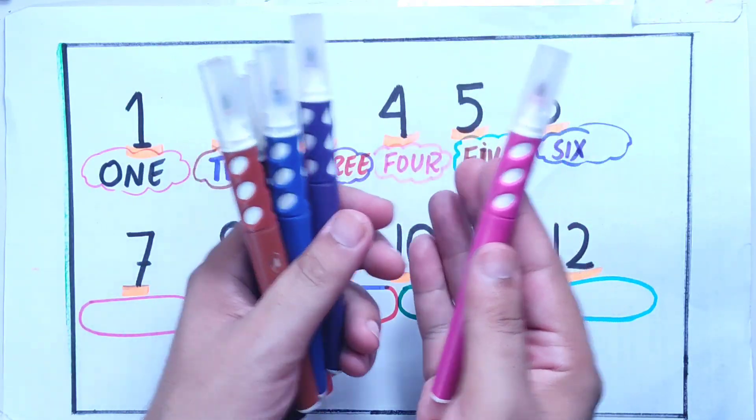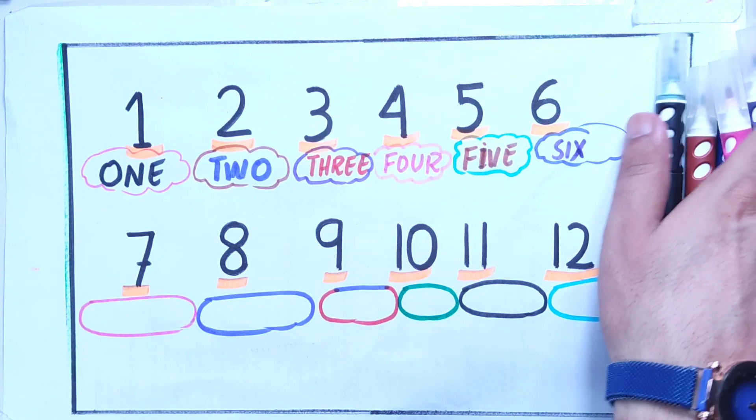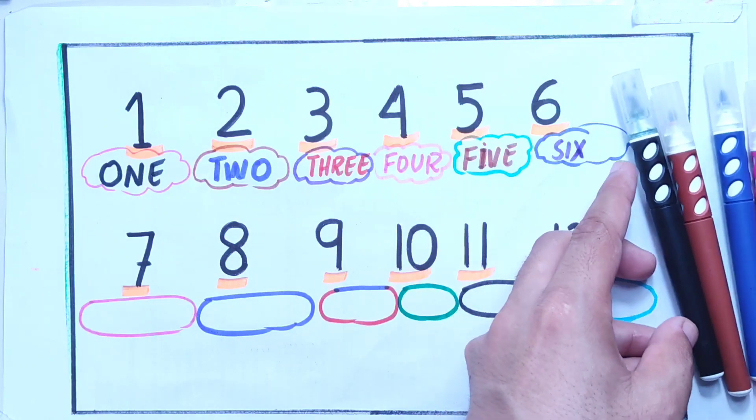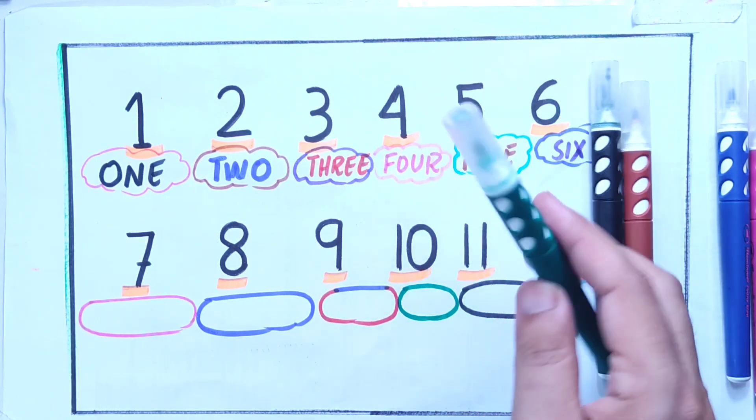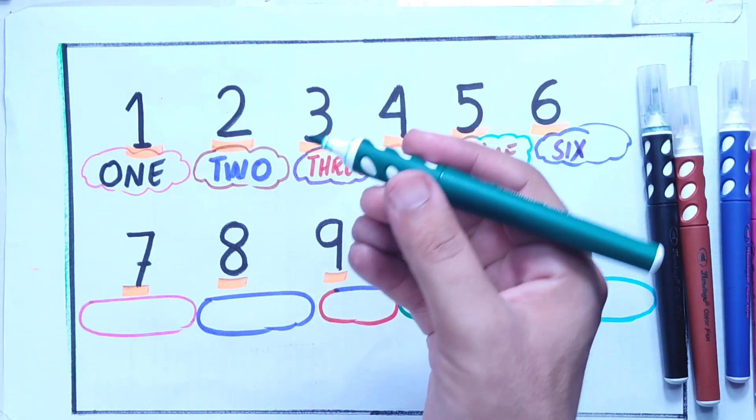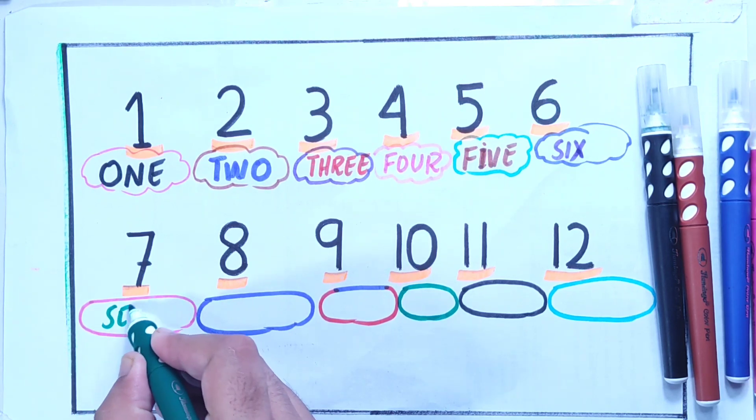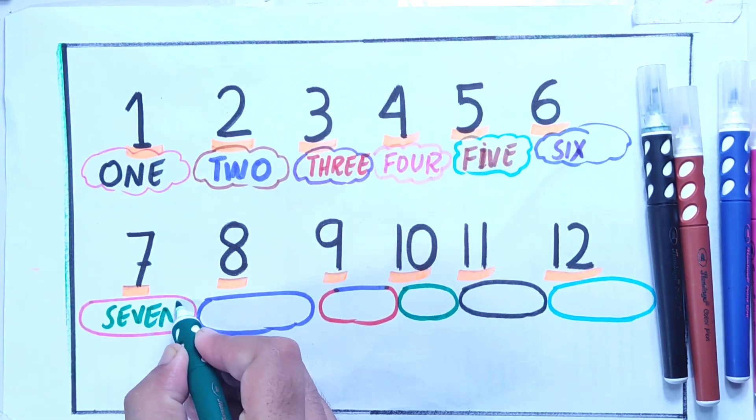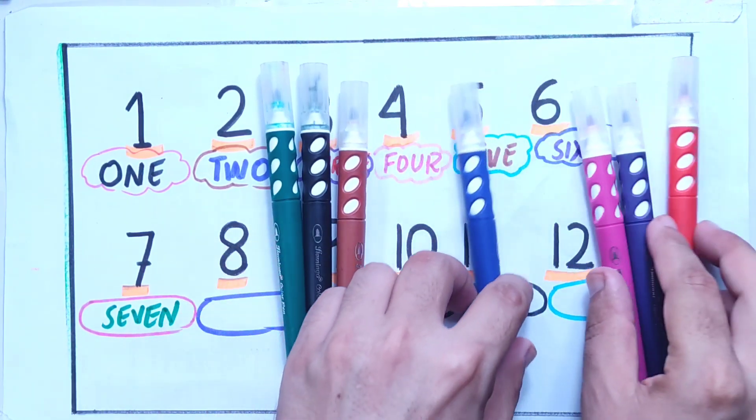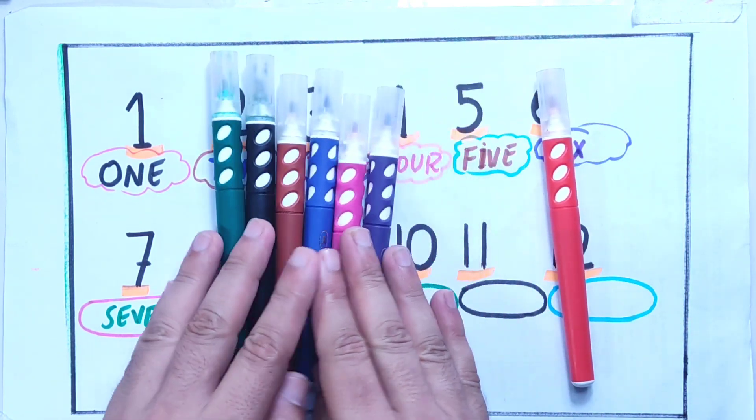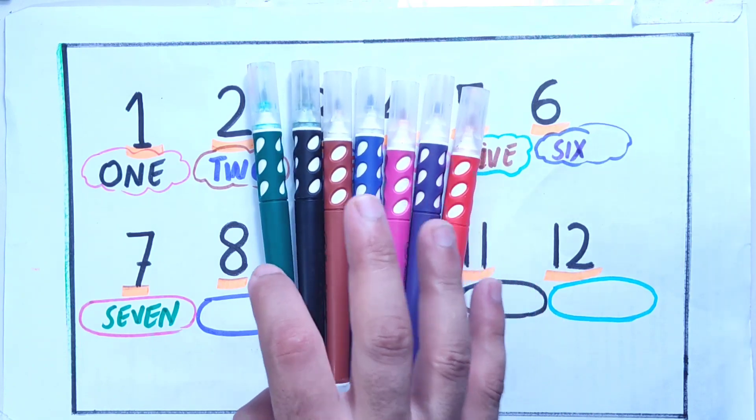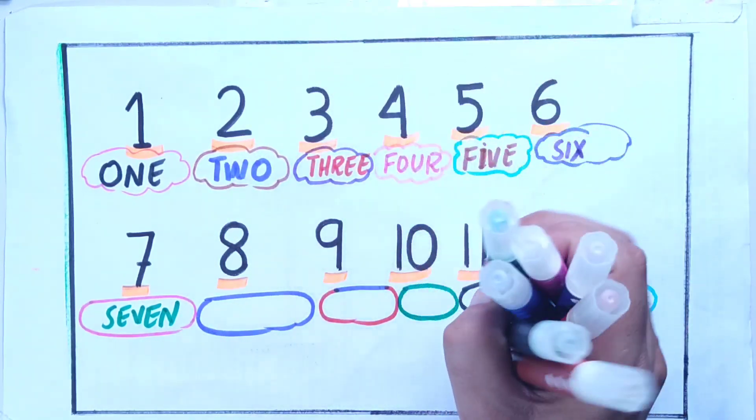And now we will take the dark blue color. You can see this is the dark blue color. Seven: S-E-V-E-N, seven. And now these are seven, three plus three, so these are six plus one, seven. You can count one, two, three, four, five, six, seven. So we got these seven colors.